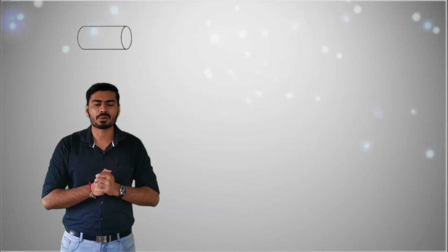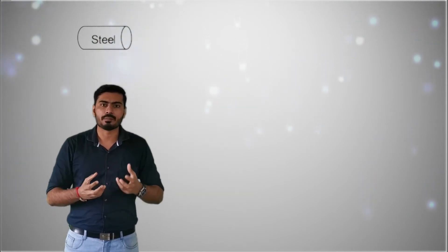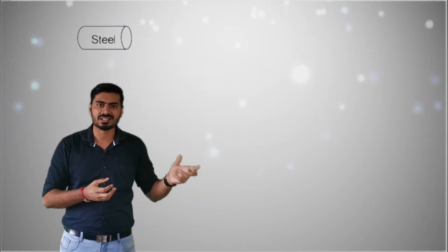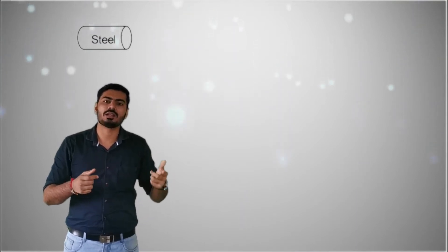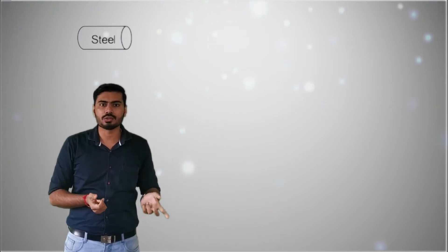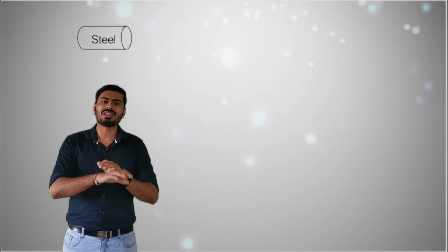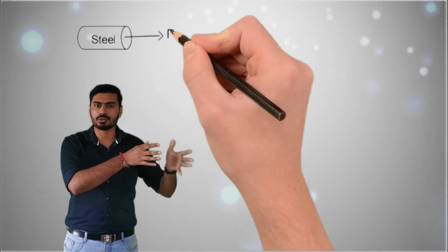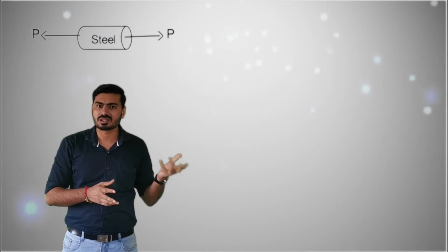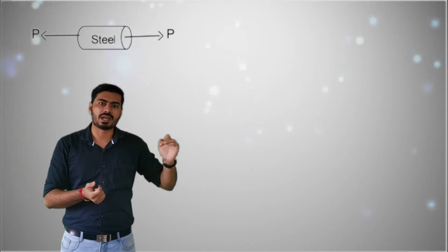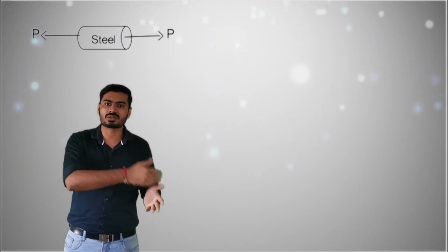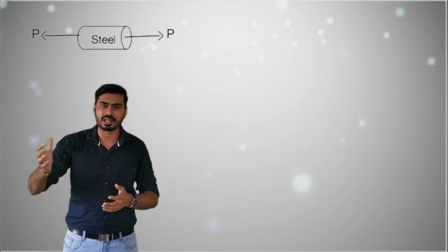First of all, we will take an example of a steel material as a specimen. We will apply a force or an external tensile force of equal magnitude in an opposite direction. This whole application is generated in a UTM, or a Universal Testing Machine, in which we gradually increase the tensile force so that we can get the different variations in the strain and accordingly get different stress readings.